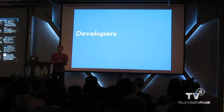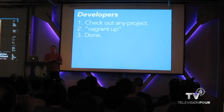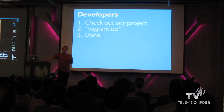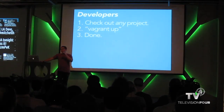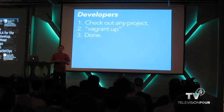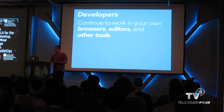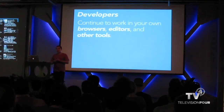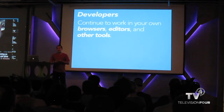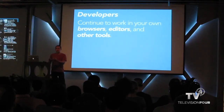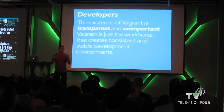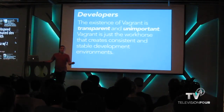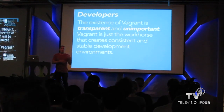From a developer standpoint, the point of Vagrant is: developers check out any project in your entire organization, run Vagrant up, and they're done. Developers continue to work in their own editors, browsers, and other tools. Vagrant sets up all the shared file systems and networking, so Vagrant just runs code and developers keep working almost completely the way they're used to. The existence of Vagrant is transparent and ultimately unimportant to a developer — it's just a means to getting a development environment. If there's too much overhead, developers won't see any value.